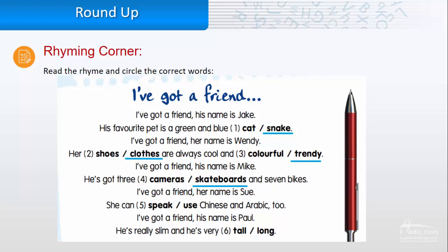I've got a friend. Her name is Sue. She can speak Chinese and Arabic too. I've got a friend. His name is Paul. He's really slim and he's very tall.